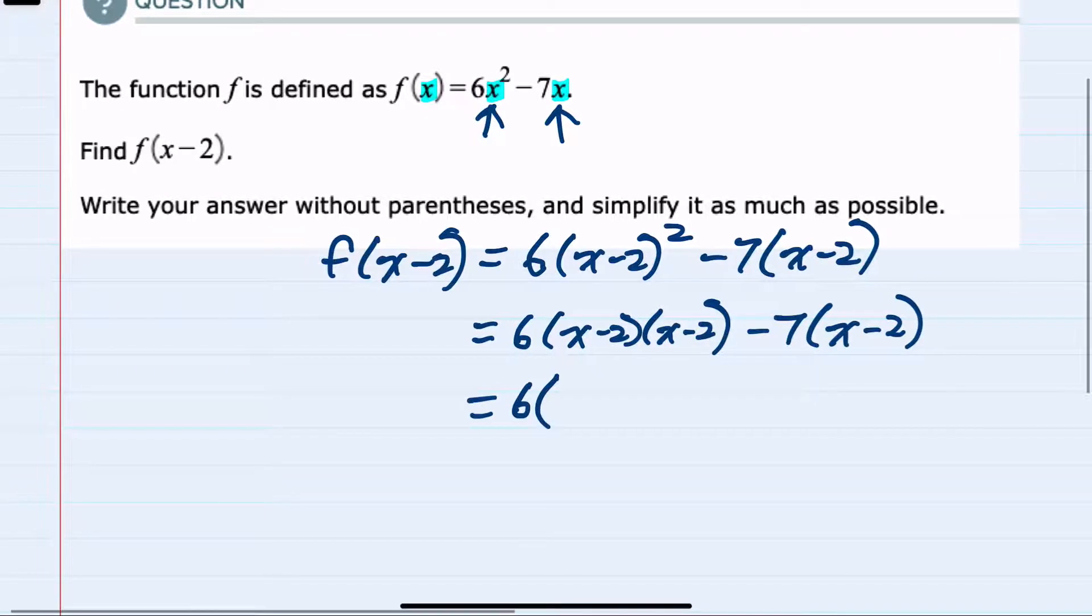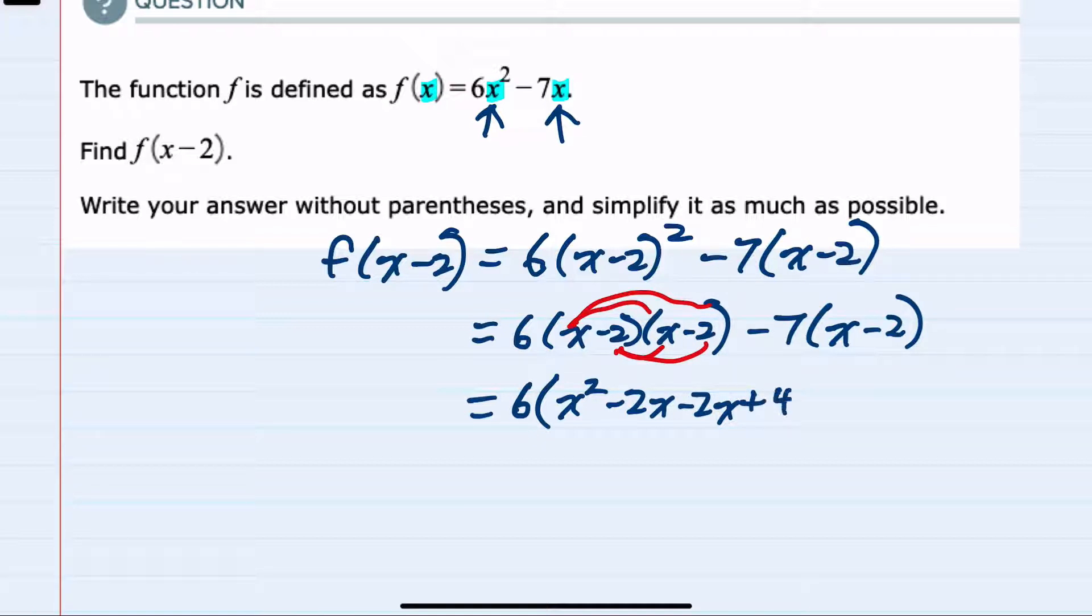Doing this multiplication as the FOIL method. Multiplying the first terms gives me x squared. Multiplying outer terms a minus 2x. Multiplying the inner terms also minus 2x. And multiplying the last terms minus 2 times minus 2 is a positive 4. Bringing down the rest of our equation.